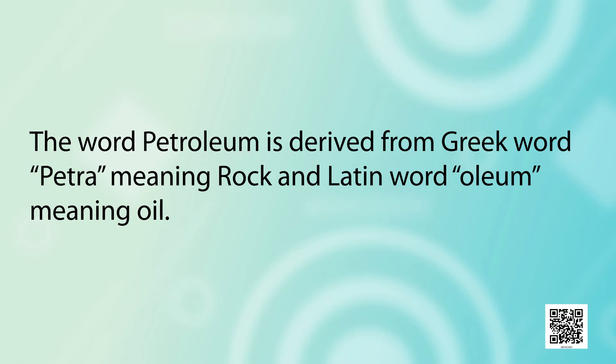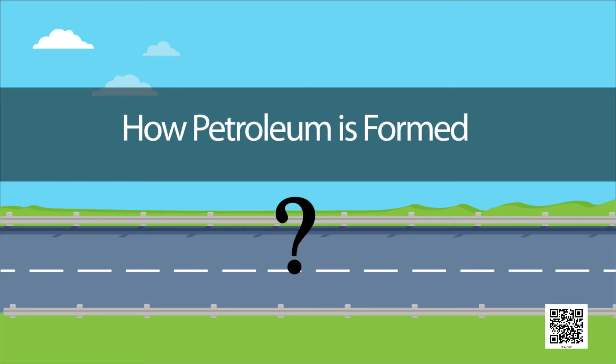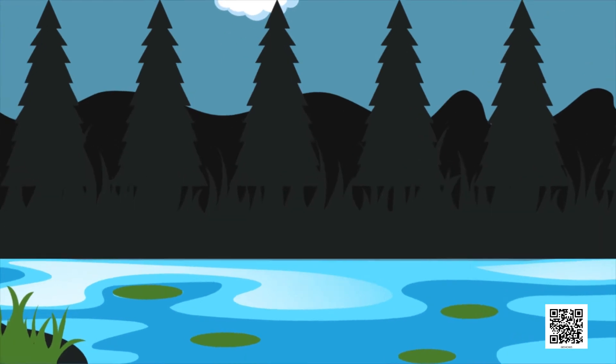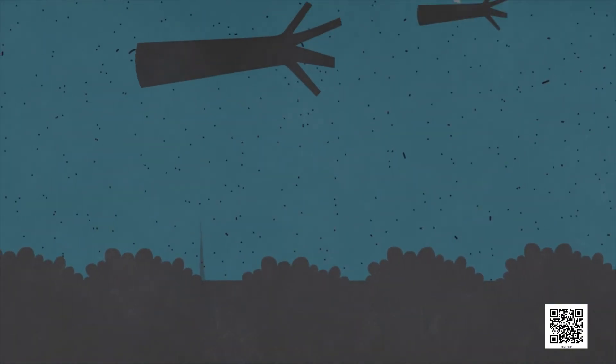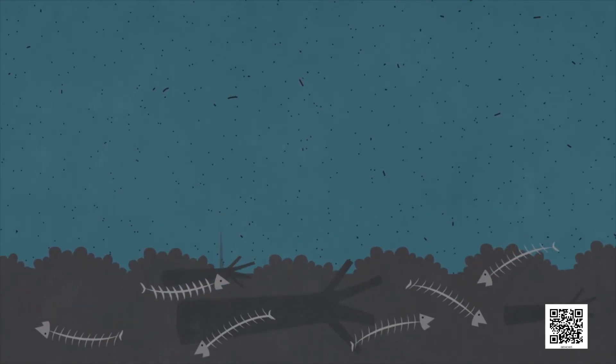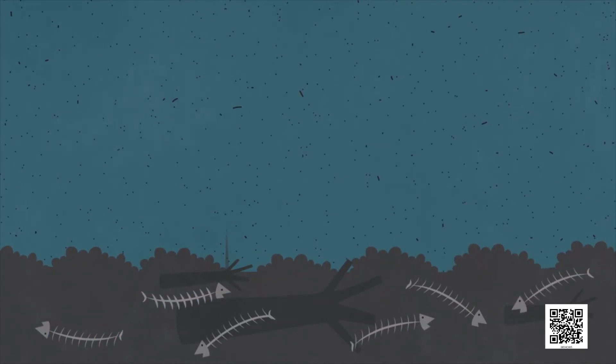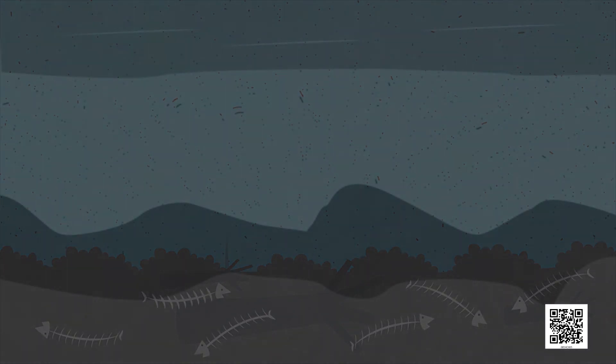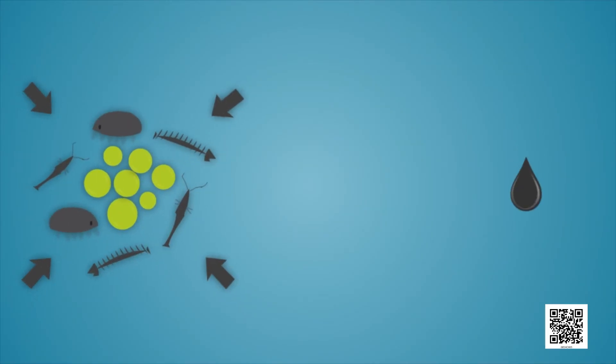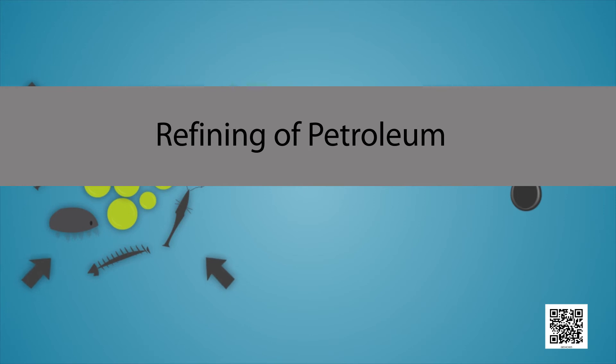Do you know how petroleum is formed? Petroleum was formed from organisms living in the sea. As these organisms died, their bodies settled at the bottom of the sea and got covered with layers of sand and clay. Over millions of years, absence of air, high temperature and high pressure transformed the dead organisms into petroleum and natural gas. Let us now see how refining of petroleum is done.